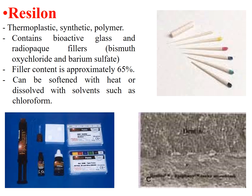In an attempt to find an alternative to gutta-percha, Resilon was developed. It is a thermoplastic synthetic polymer containing bioactive glass and radiopaque fillers like bismuth oxychloride and barium sulfate, with the filler comprising about 65% by volume. It can soften with heat or be dissolved with solvents like chloroform. It may be present in pellets or cones, has its own sealers, and was designed to create a monoblock between the dentine and the filling material.